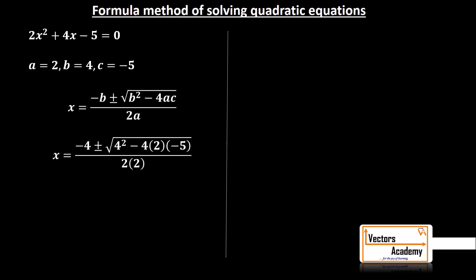Let's try it. So, substituting the values of b, i.e. minus 4, a, i.e. 2 and c, i.e. minus 5 in the formula, I'll get the following equation.